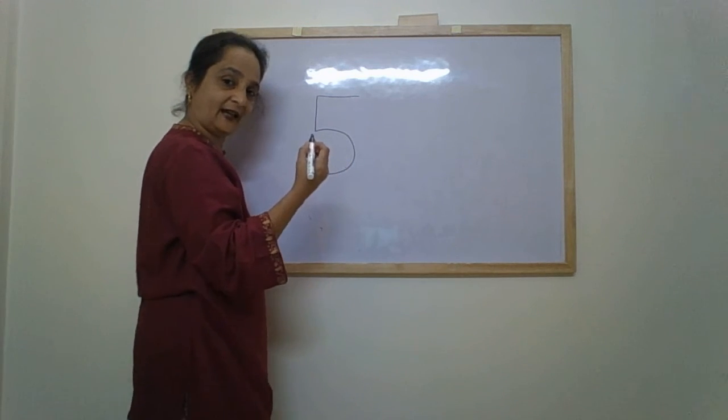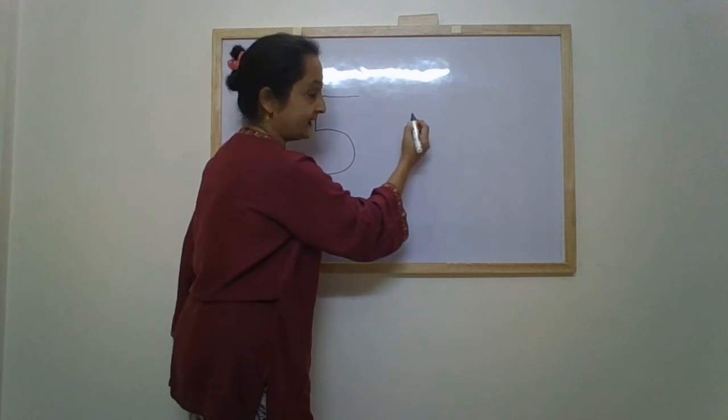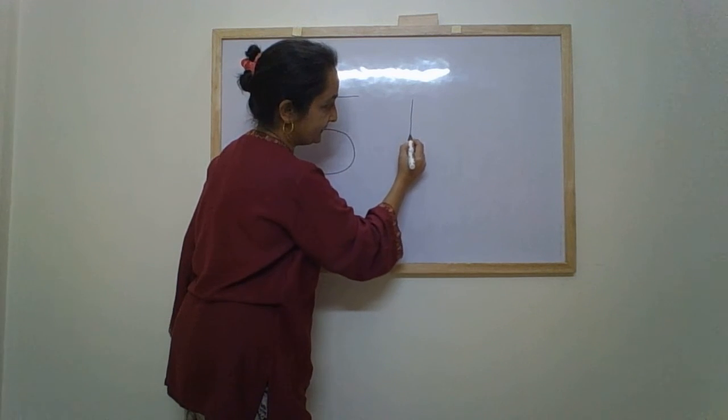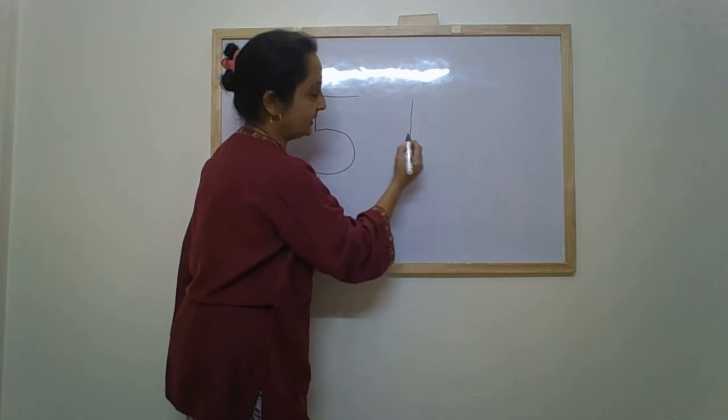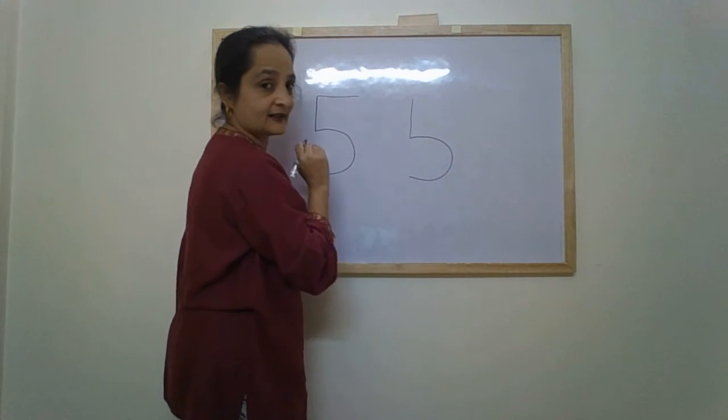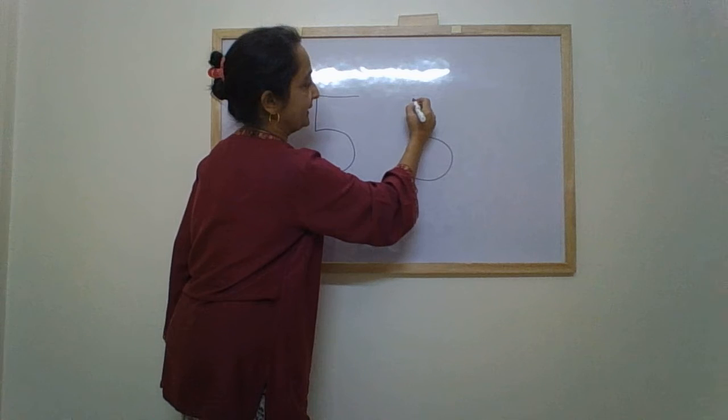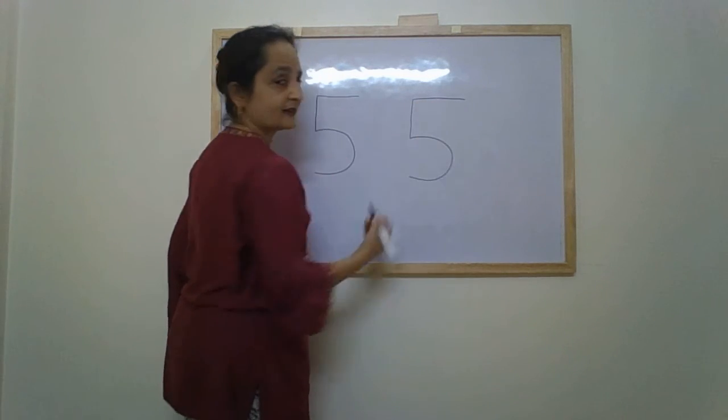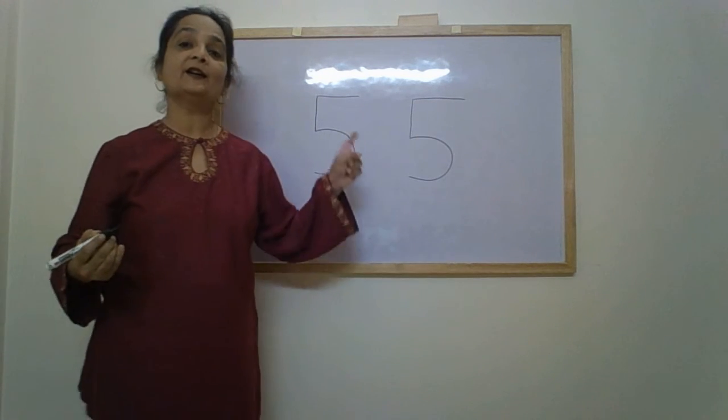Once again, standing line, forward curve and a sleeping line. This is number 5.